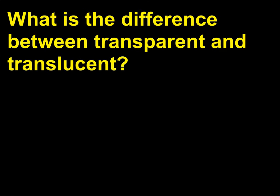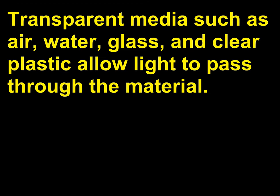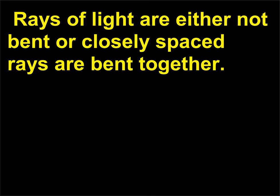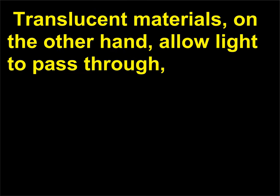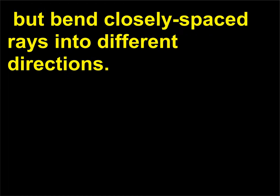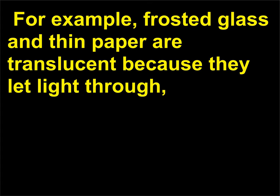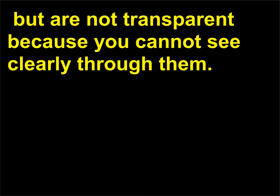What is the difference between transparent and translucent? Transparent media such as air, water, glass, and clear plastic allow light to pass through the material. Rays of light are either not bent or closely spaced rays are bent together. Translucent materials, on the other hand, allow light to pass through but bend closely spaced rays into different directions. For example, frosted glass and thin paper are translucent because they let light through, but are not transparent because you cannot see clearly through them.